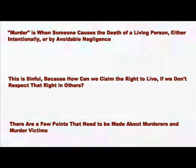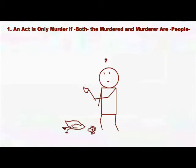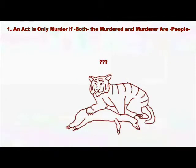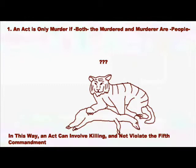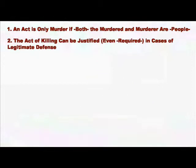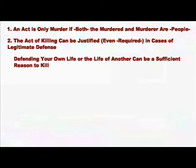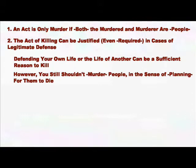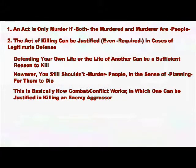There are, however, some important points that should be made about murderers and the murdered. First, in order for an act to be murder, both the murderer and the murdered person must be people. You're not guilty of murder when you cut off the head of a chicken, nor is a tiger guilty of murder when it pounces on a gazelle — this is one way an act can involve killing but still not be a violation of the fifth commandment. Second, the act of killing can be justified, and even required, in the case of legitimate defense. Defending one's own life, or the life of another, can be sufficient reason to kill. However, even this is not enough reason to actually murder someone — to plan to kill them and then carry that plan out. This is to do with conflict in which one is forced to deal a lethal blow to an aggressor.